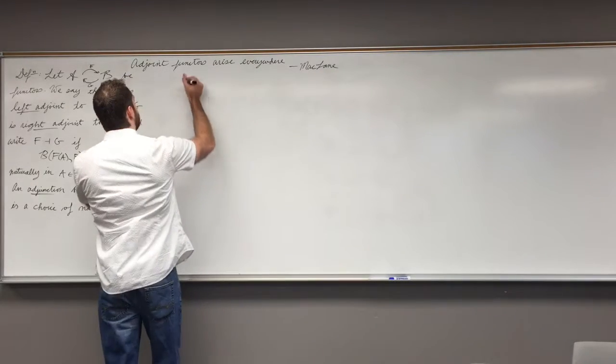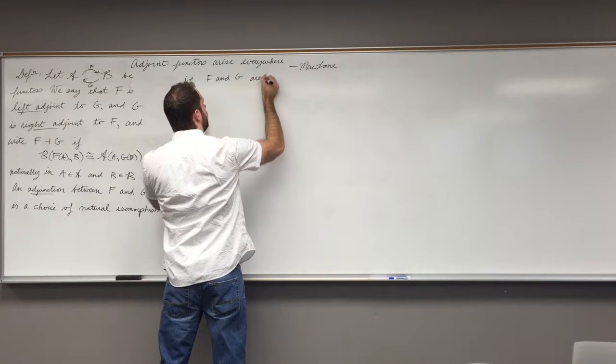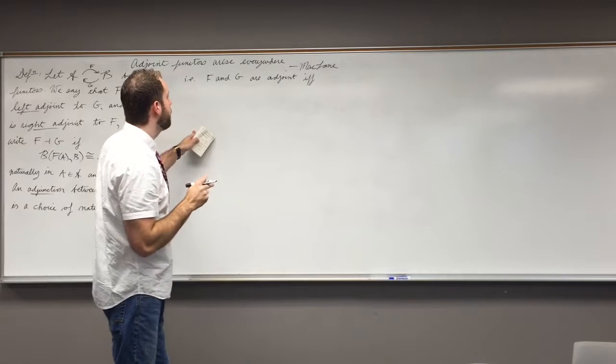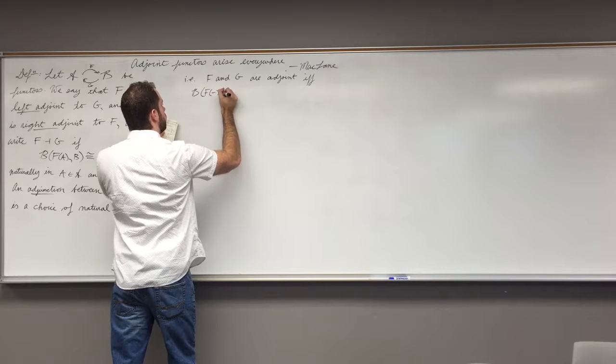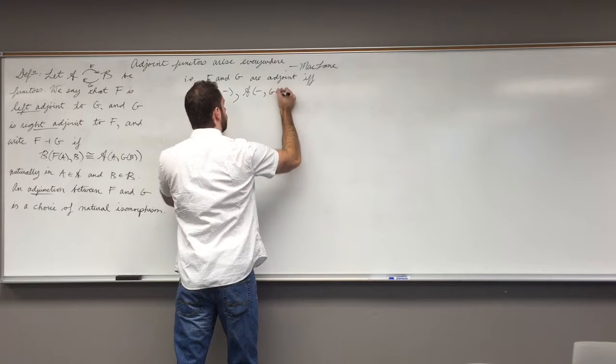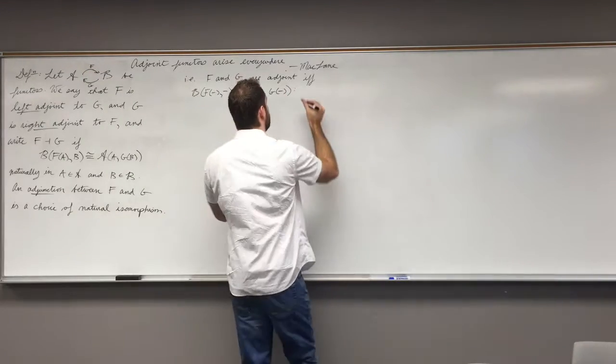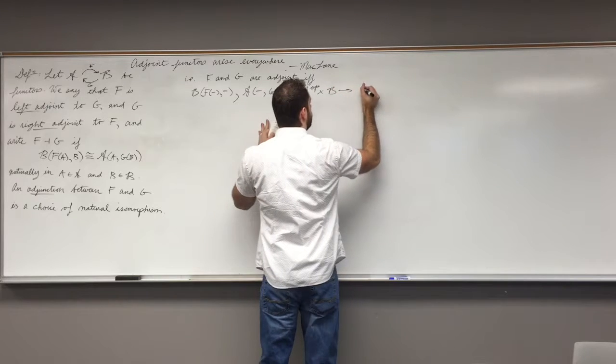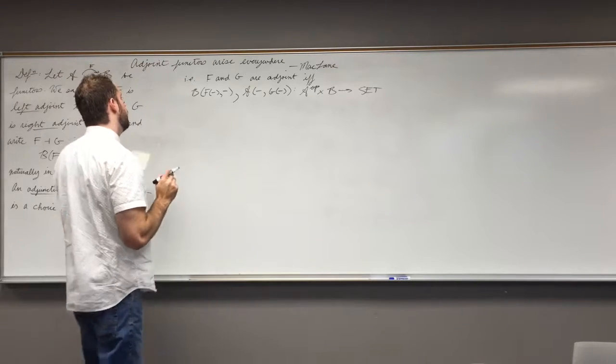So we have, in other words, F and G are adjoints. And this is if and only if we have the following functors, which are going from dual of A cross B into the category of sets, are naturally isomorphic.